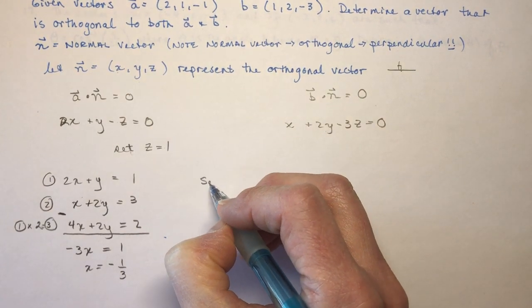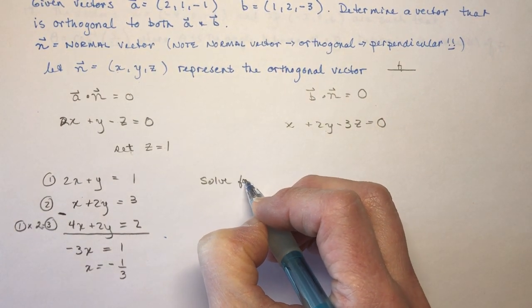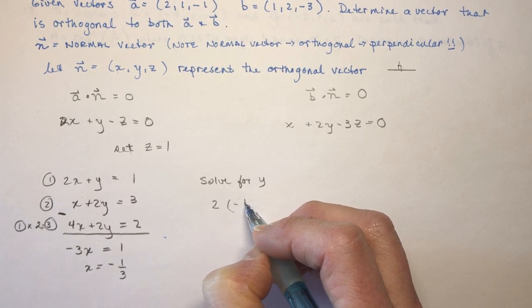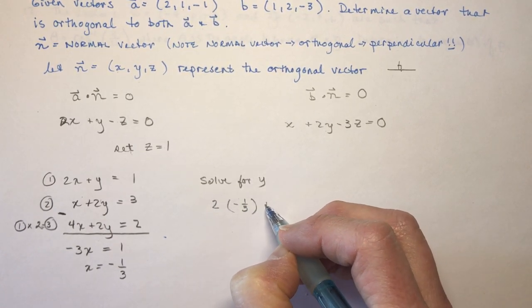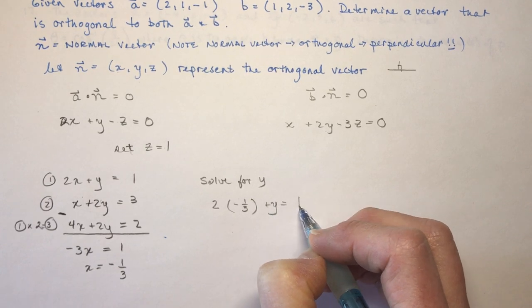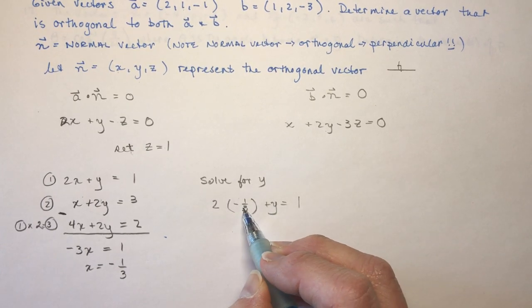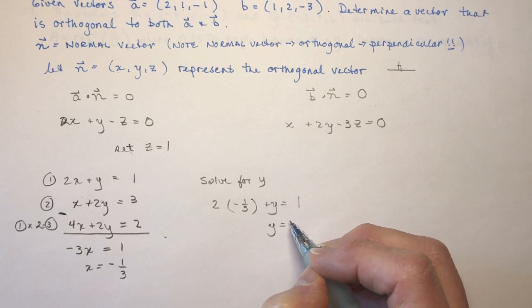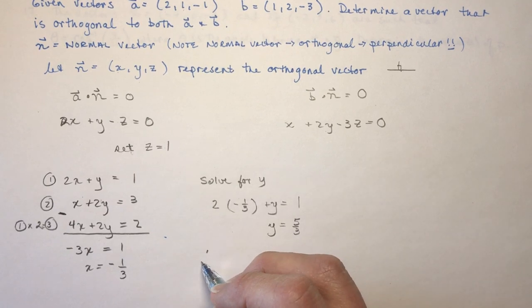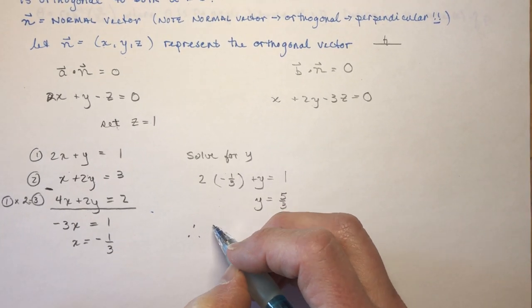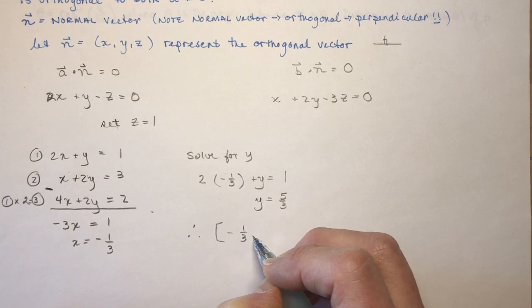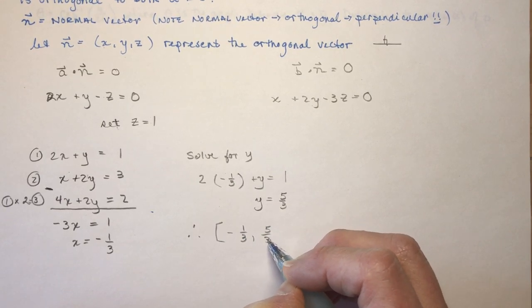Now we're going to solve for Y. And that would be easy because we just have to plug in minus 1 third in for X. And I have minus 2 thirds. I'm going to add 2 thirds on this side. So I'm adding 2 thirds to 3 thirds. That's going to give me 5 thirds. So that means a vector orthogonal to both of these vectors would be minus 1 third, 5 thirds, and 1.